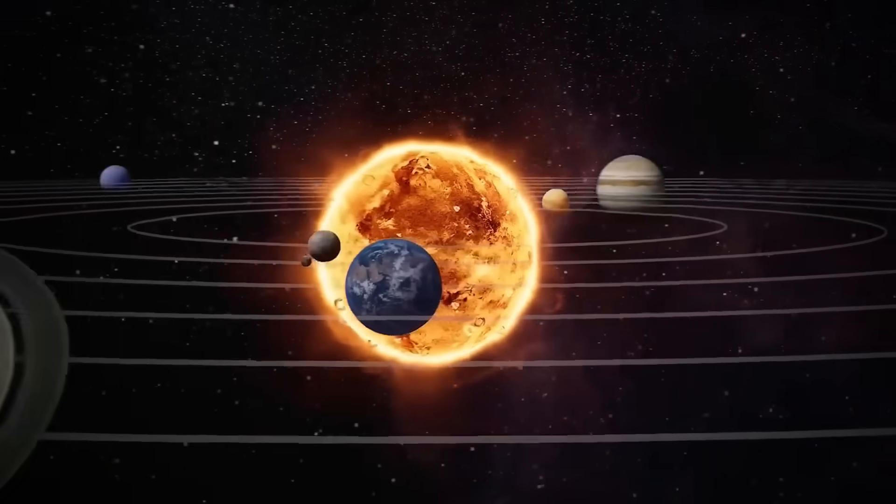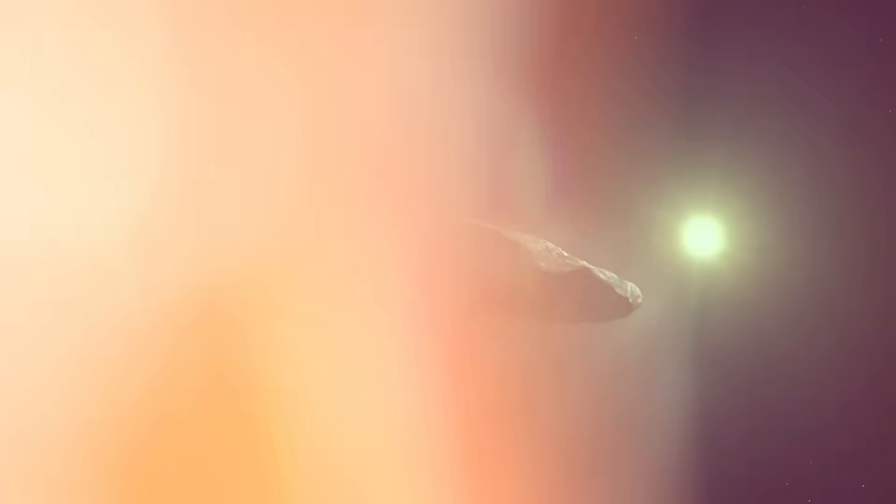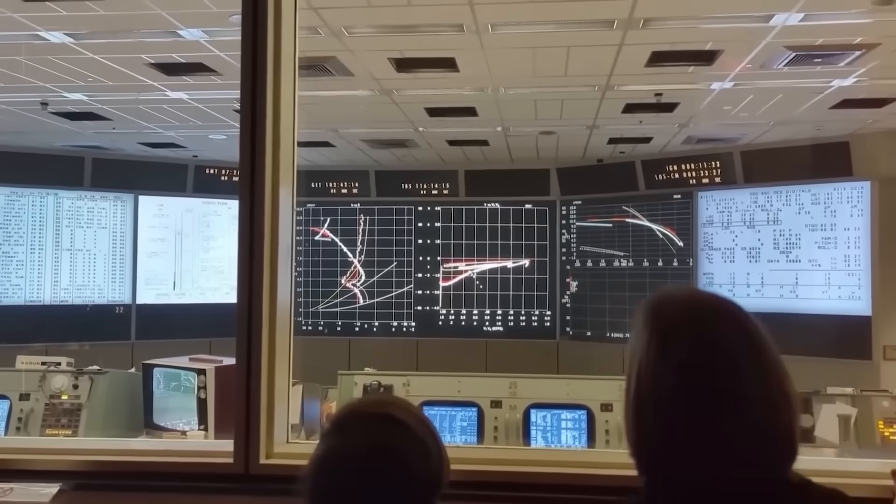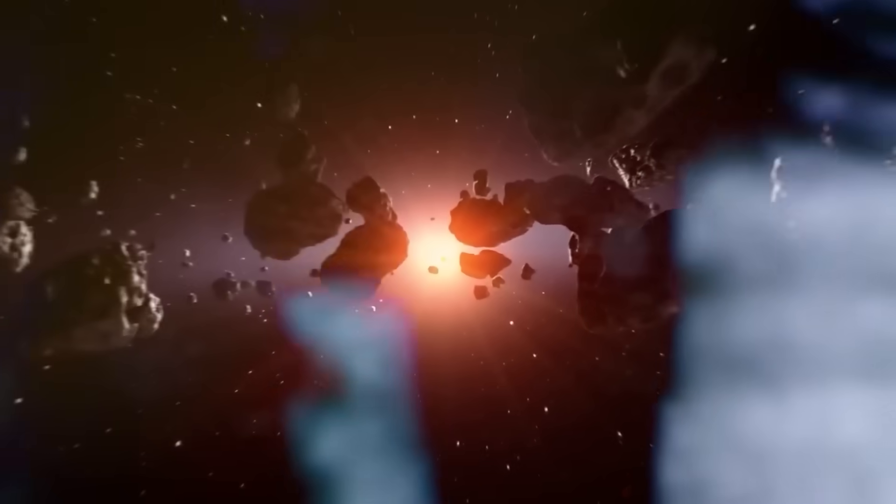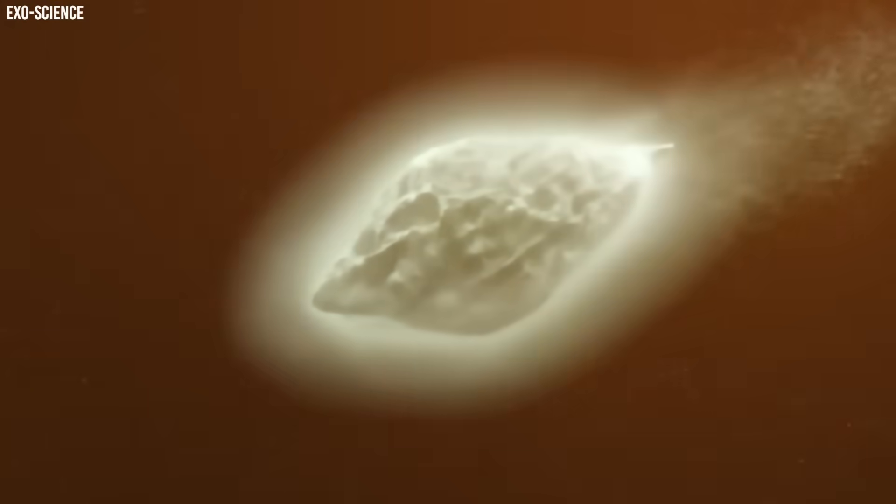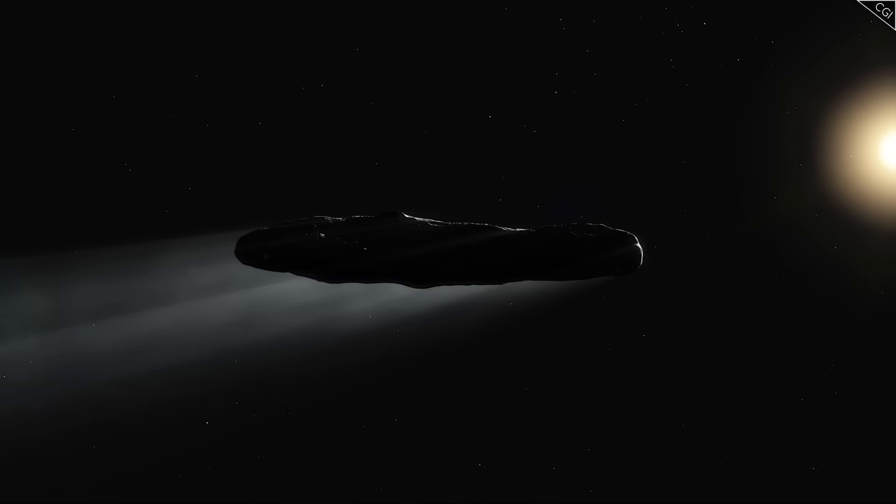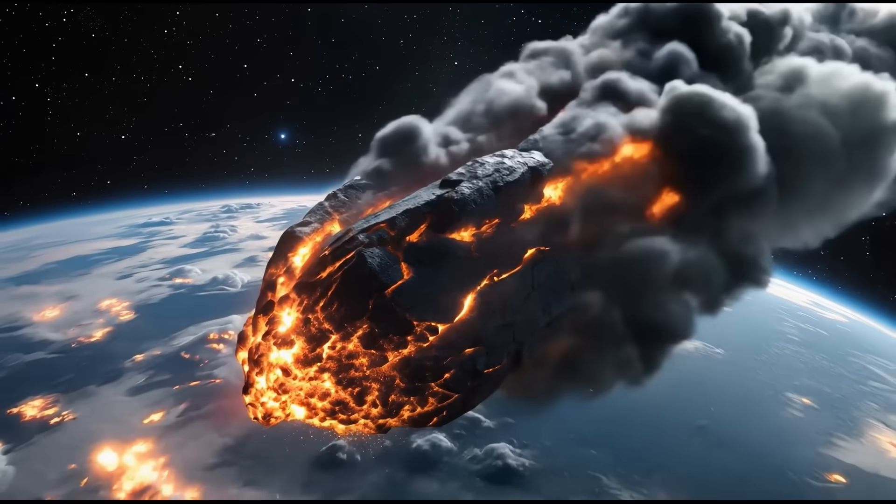When we step back and look at everything 3i Atlas has done, everything we've measured, everything we've calculated, everything we've witnessed, it becomes impossible to pretend this is just another interstellar comet drifting silently through the solar system. Nothing about this object behaves the way it should. Not its brightness. Not its mass loss. Not its tails. Not its jets. Not its survival. Not its structure. Not its refusal to break apart despite every law of physics screaming that it should have shattered weeks ago.